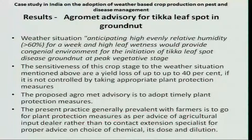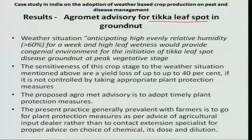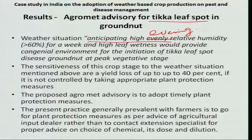Moving to another example — this is for Tikka leaf spot in groundnut, which may be early or late leaf spot. The weather situation that triggers this disease is anticipating high evening relative humidity of more than 60% for 7 consecutive days, combined with high leaf wetness. This provides a congenial environment for the disease spores to germinate and reach a level that damages the crop.